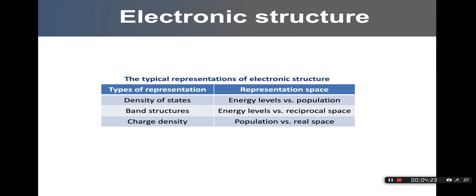Here I summarize three major representations of electronic states. First is density of states, which is essentially the energy levels versus the population of the electronic states. The second is band structure, which is the energy levels versus reciprocal space. The third is charge density, which is the population of electronic states as a function of real space coordinates — in other words, the electron density distribution in the real material.